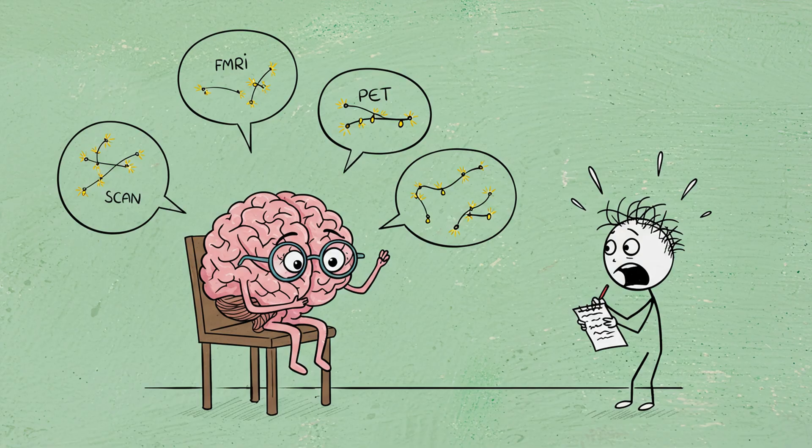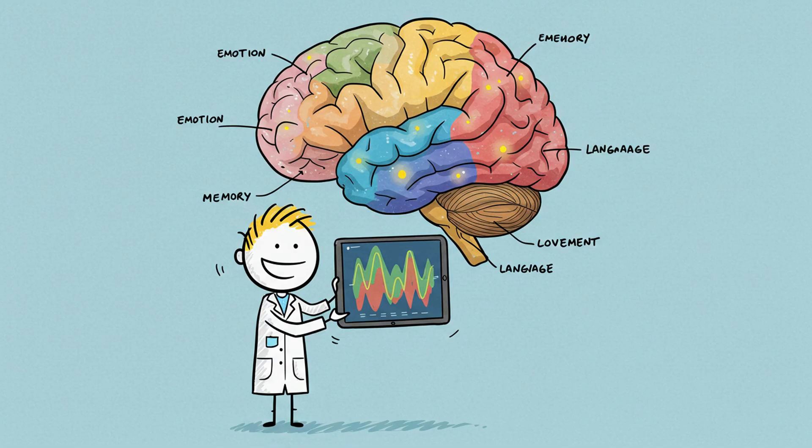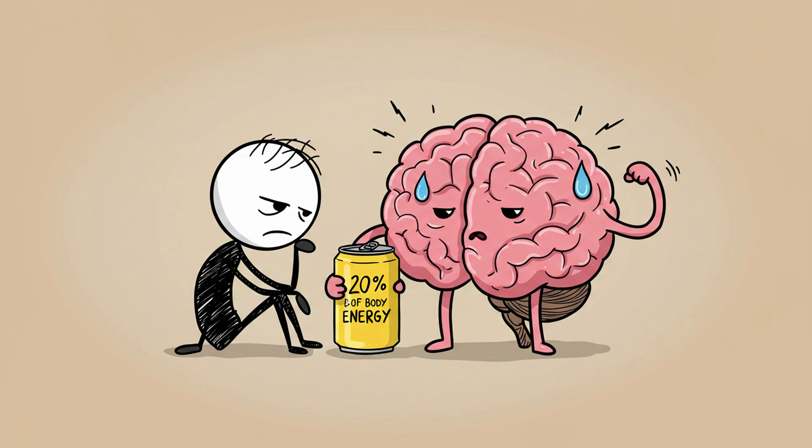Modern brain imaging, FMRI PET scans, show activity all across the brain, even when we're resting or daydreaming. Different regions light up for movement, memory, emotion, language. Nothing sits idle. The brain uses almost 20% of your body's total energy.